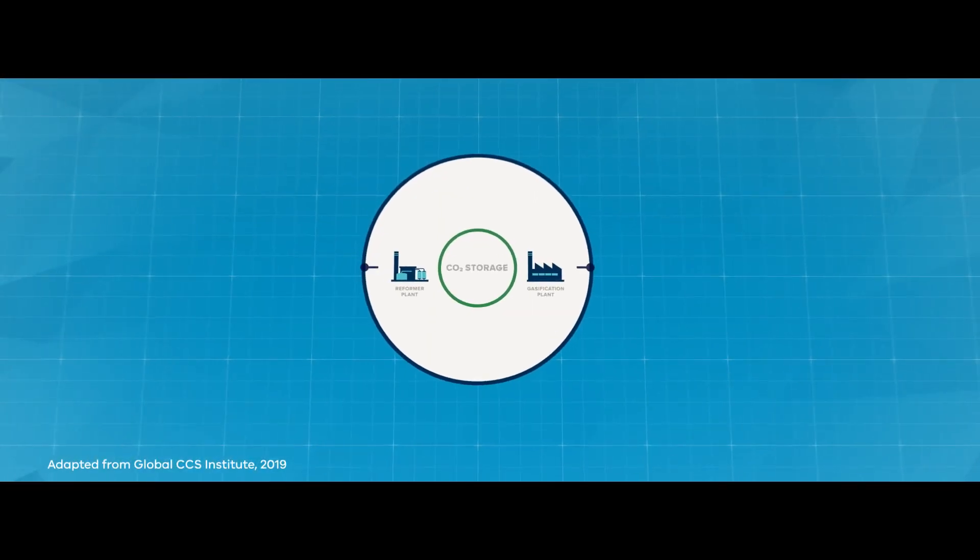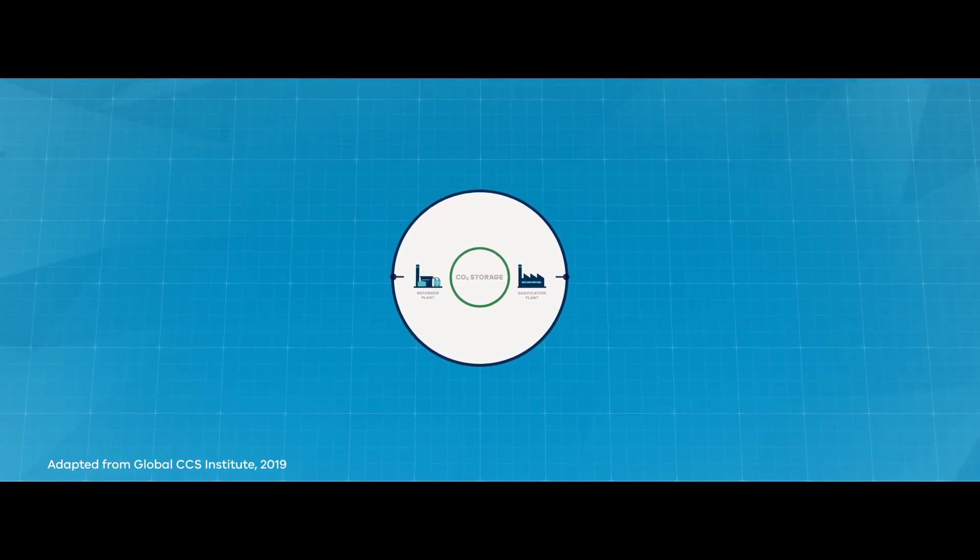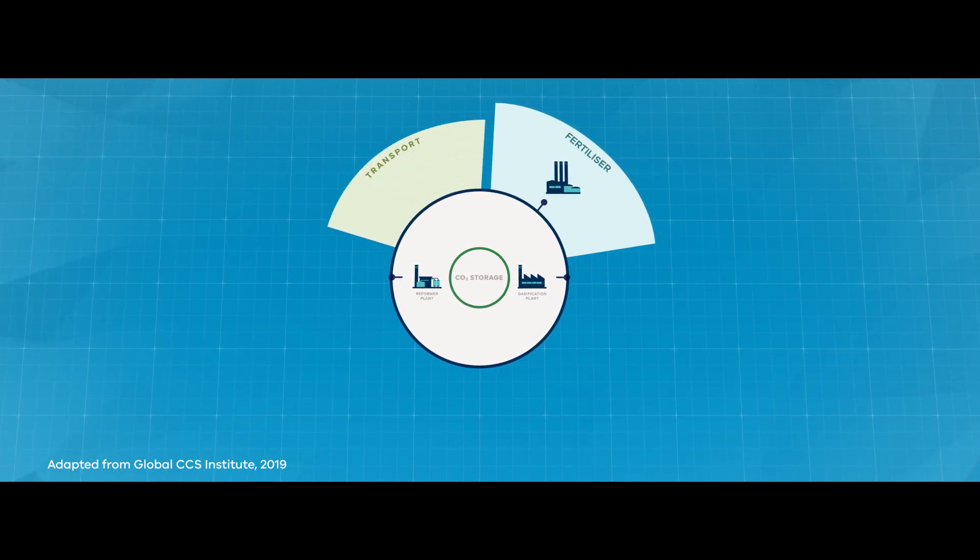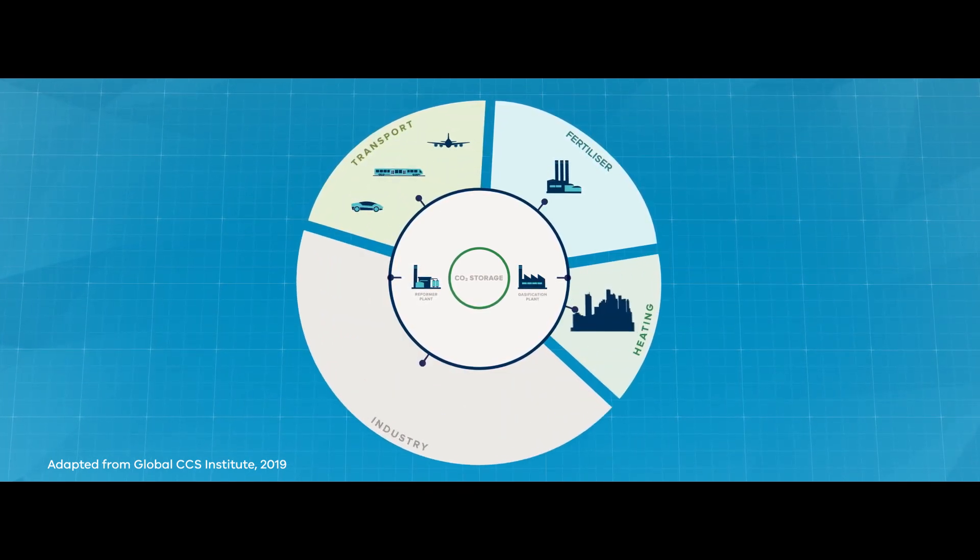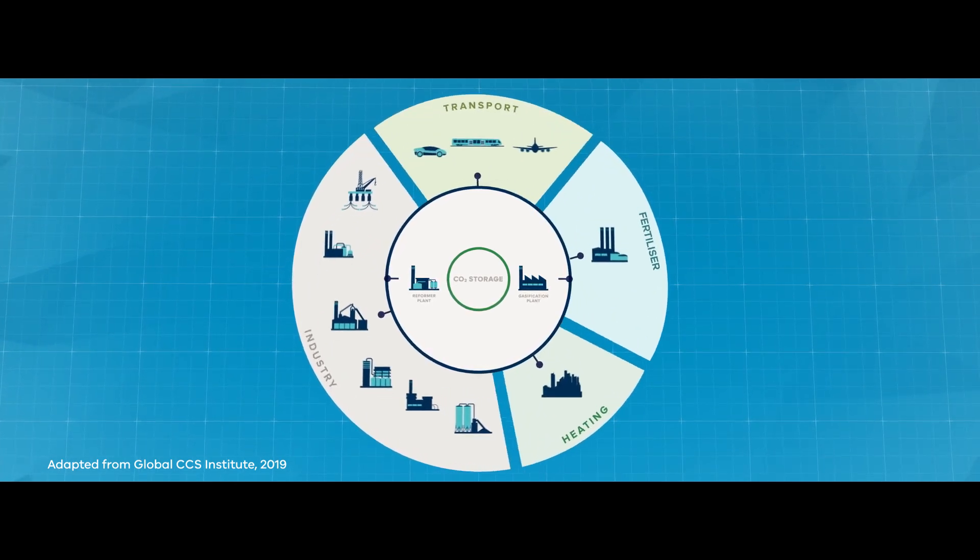As CarbonNet proceeds to commercialisation, it will enable new industries in Victoria, such as fertiliser production and clean hydrogen for transport, heating and industrial use, boosting jobs and increasing investment into the state.